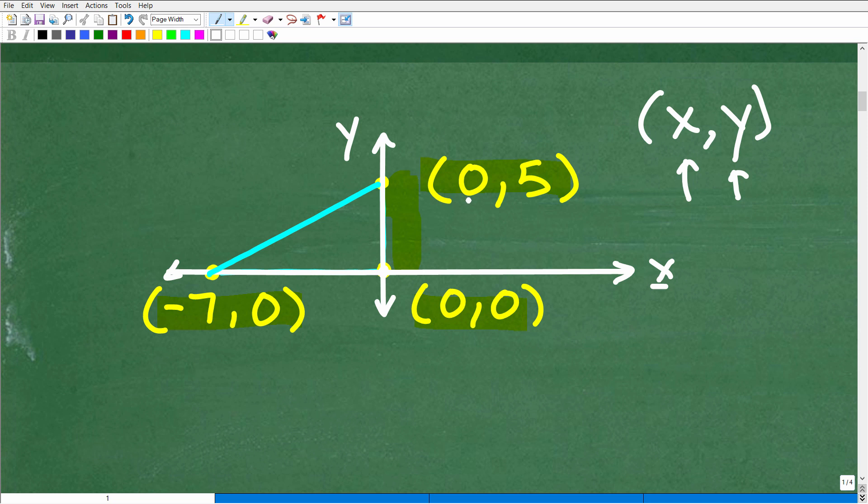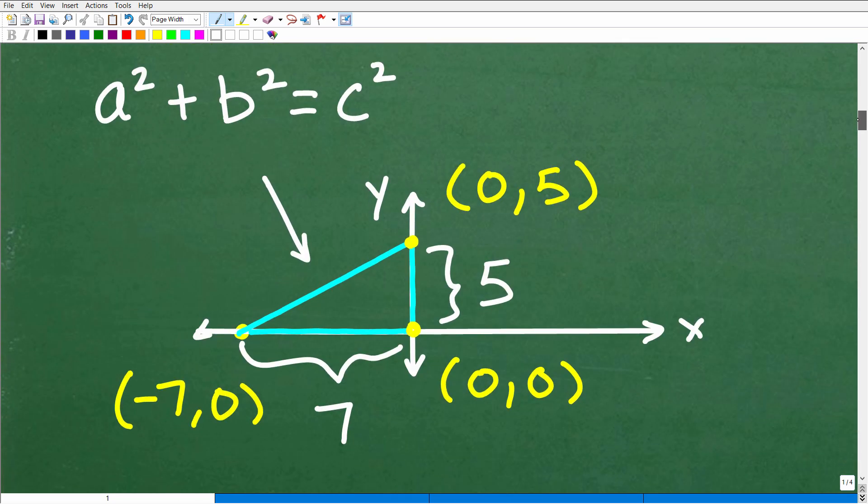(0,5) is what? X is 0, there is no movement on X, but there is movement on Y: 5. So this is 1, 2, 3, 4, 5 right there. You can't do this problem unless you understand how to plot points on the XY coordinate plane. But anyways, it's very easy to determine this length and this length. We'll talk about this length in a second, but we're going to need all the lengths of this triangle to determine the perimeter.